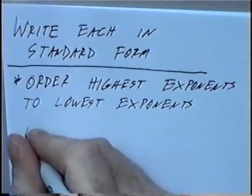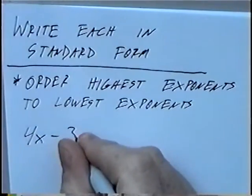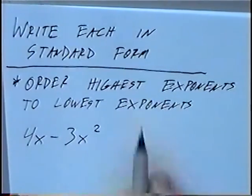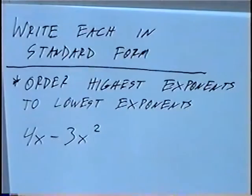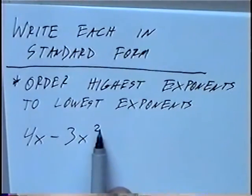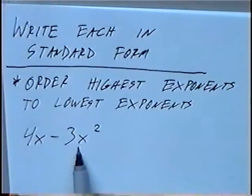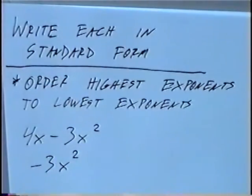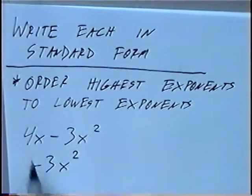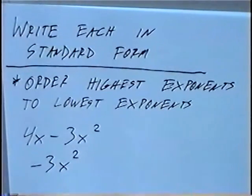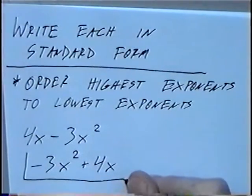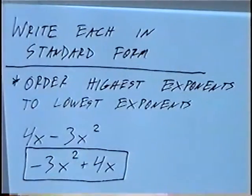First question: 4x minus 3x squared. To write in standard form, we place the term with the highest exponent first. The highest exponent is 2, so the term minus 3x squared goes first. The next term, 4x, since it's positive, we write plus 4x. So in standard form, from highest to lowest exponents: negative 3x squared plus 4x.